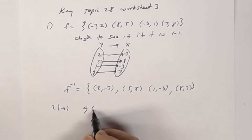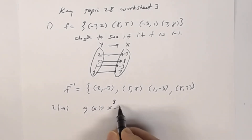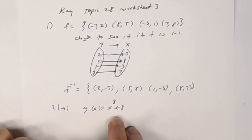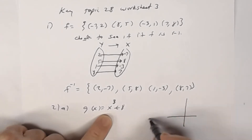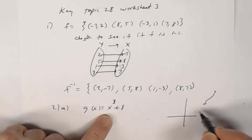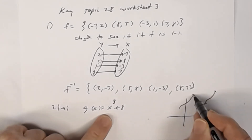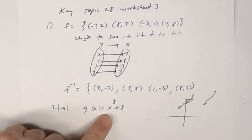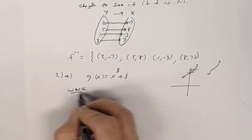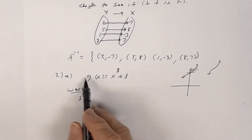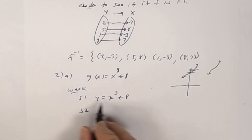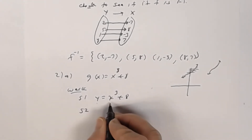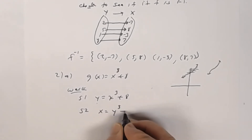Number 2a: g(x) = x³ + 8. You're told these are one-to-one functions — and you already knew this one was, because the cube function passes the horizontal line test; all you're doing is shifting it up 8 units. You want to do these algebraically. Step 1: replace g(x) with y, so y = x³ + 8. Step 2: interchange the variables — y becomes x and x becomes y — so x = y³ + 8.